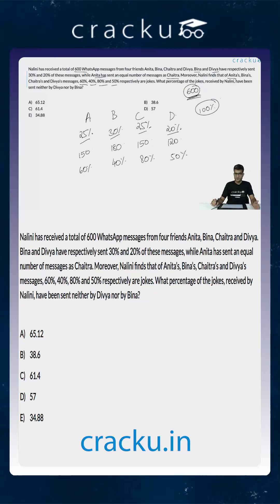So the number of jokes sent by each of the four friends will be: 150 into 60% which is 90 for Anita, 180 into 40% which is 72 for Bina, 150 into 80% which is 120 for Chaitra, and 120 into 50% which is 60 for Divya.